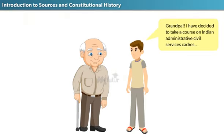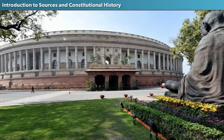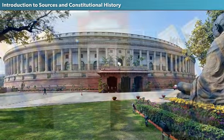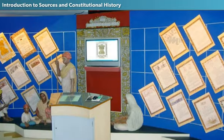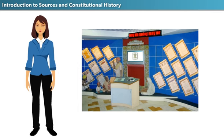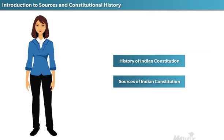When Jacob told his granddad about his decision, Sam became very happy and decided to give Jacob some knowledge about the Indian Constitution before he took up the course. So the very next day, he took Jacob to the Parliament Museum in New Delhi, where all the details about the Constitution are exhibited. And what Sam Daniel taught Jacob is what we are going to discuss in a series of lessons. Today, we focus on the history and sources of the Indian Constitution.